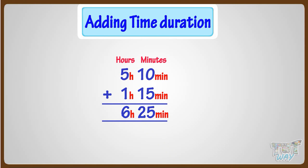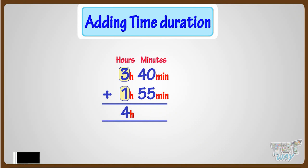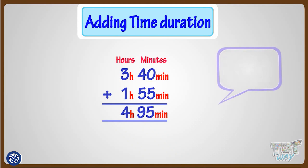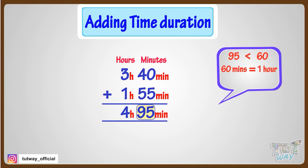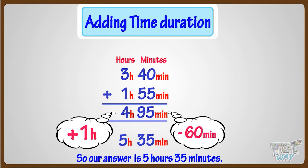Now let's take another example. We have to add 3 hours 40 minutes to 1 hour 55 minutes. Adding hours, we get 3 plus 1 equals 4 hours. And adding minutes, we get 40 plus 55 equals 95 minutes. Here, the minutes are more than 60, and we know 60 minutes make an hour. So subtract 60 from minutes and add 1 to hours. So 95 minus 60 equals 35 minutes, and adding 1 to hours, we get 5 hours. So our answer is 5 hours 35 minutes.